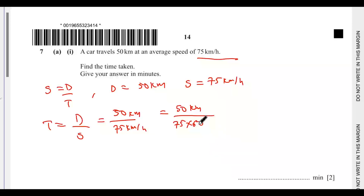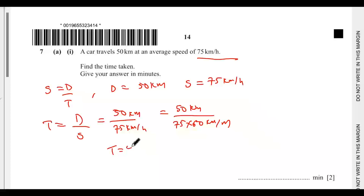...that will be in minutes — so the units become kilometers per minute. Alternatively, you can do the division and then convert your answer to minutes. If you input this into a calculator, the value of t is 40 minutes.